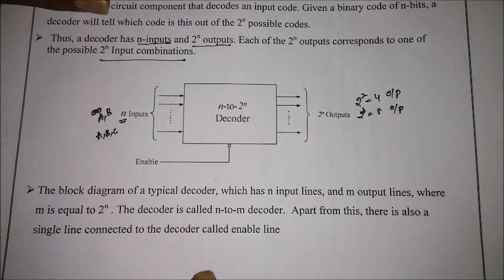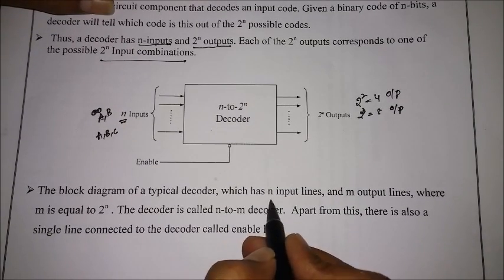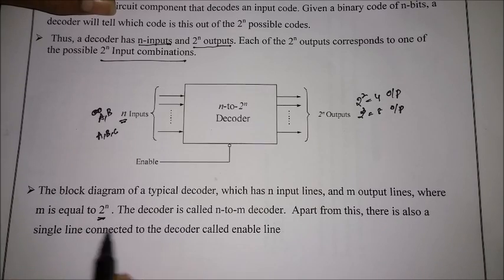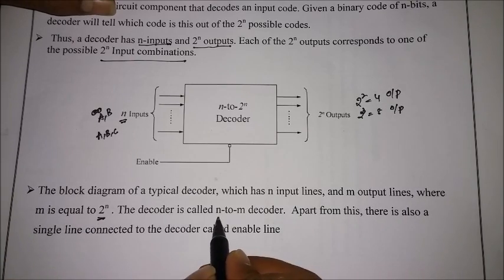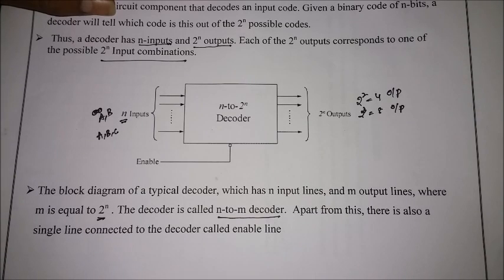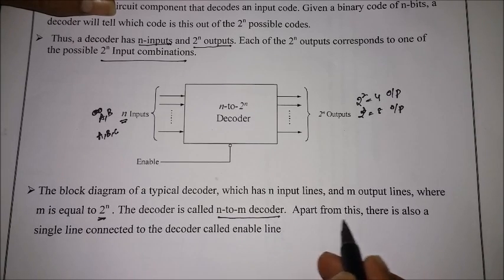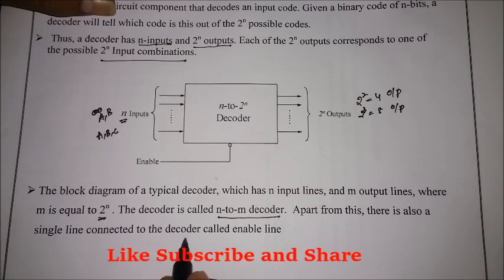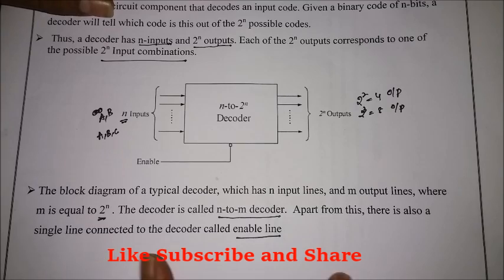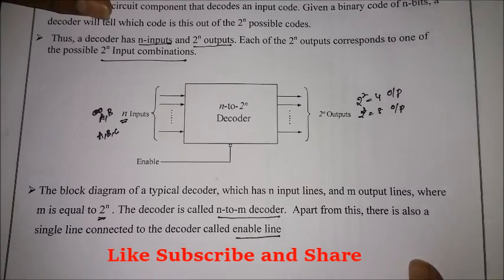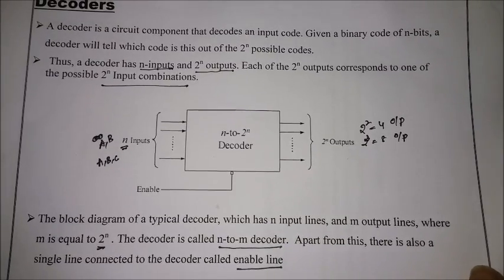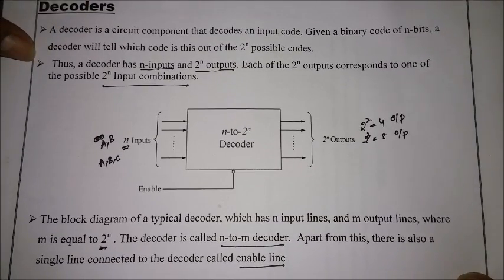The block diagram of a typical decoder has n input and m output lines, where m equals 2^n. This decoder is called an n-to-m decoder. There is also one additional line connected to the decoder called the enable line — only when this enable is high will the decoder work.